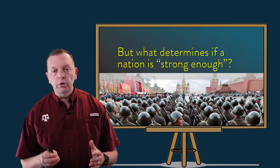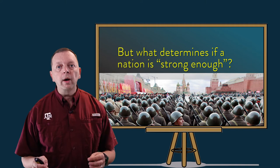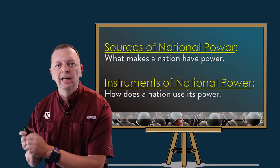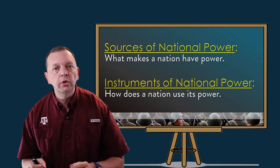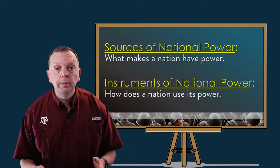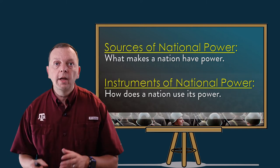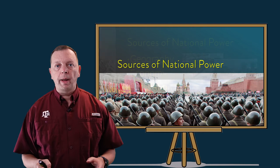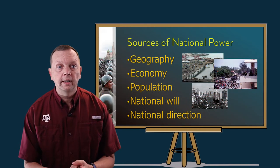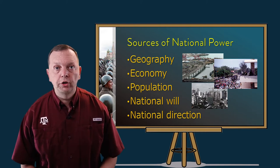When strategic planners in Washington, D.C., or any other nation's capital think about national power, they talk about it in terms of the sources of national power and the instruments of national power. The sources of national power is what contributes to a nation having power. The instruments of national power is how nations use this power. The sources of national power are physical geography, economy, population, national will, and national direction.